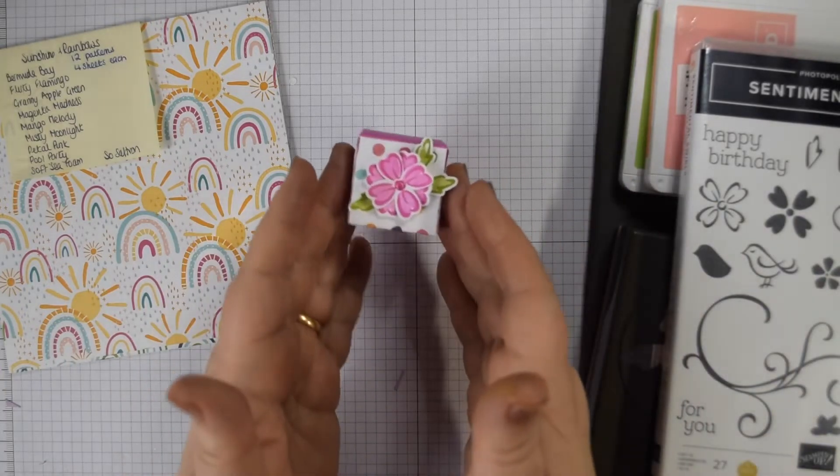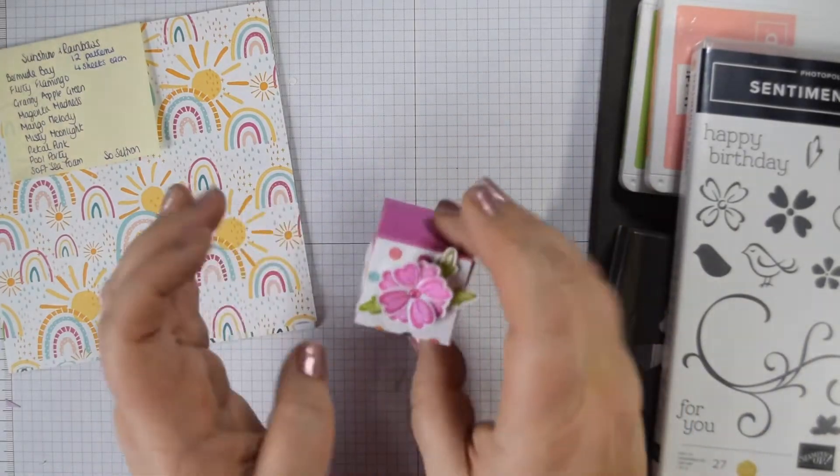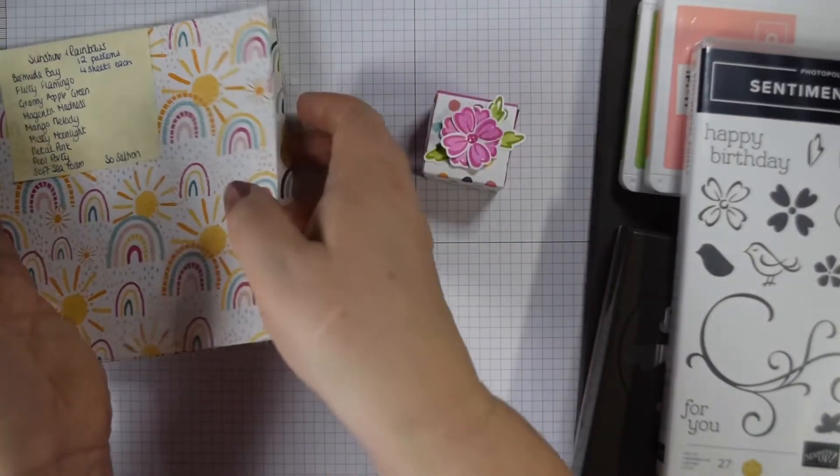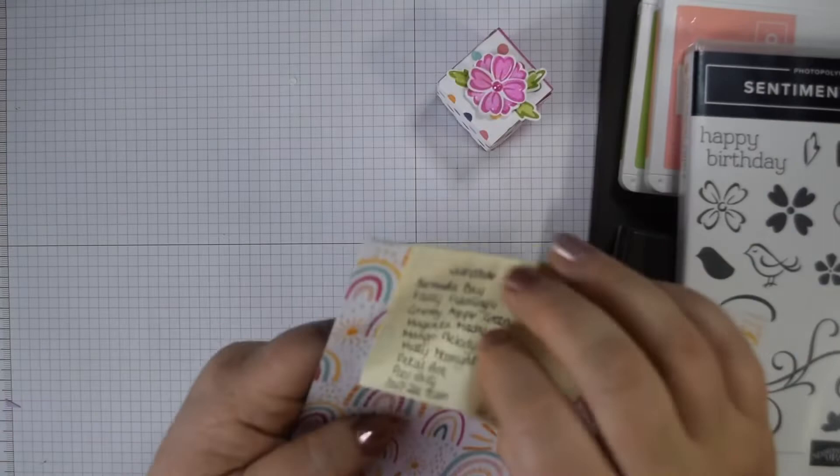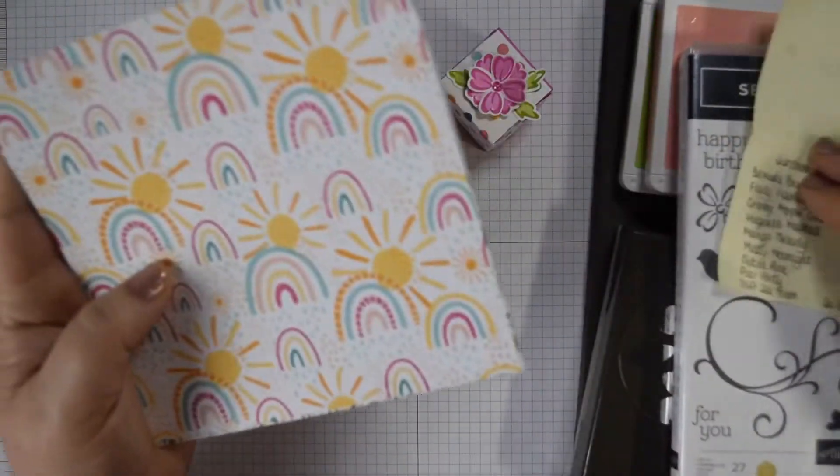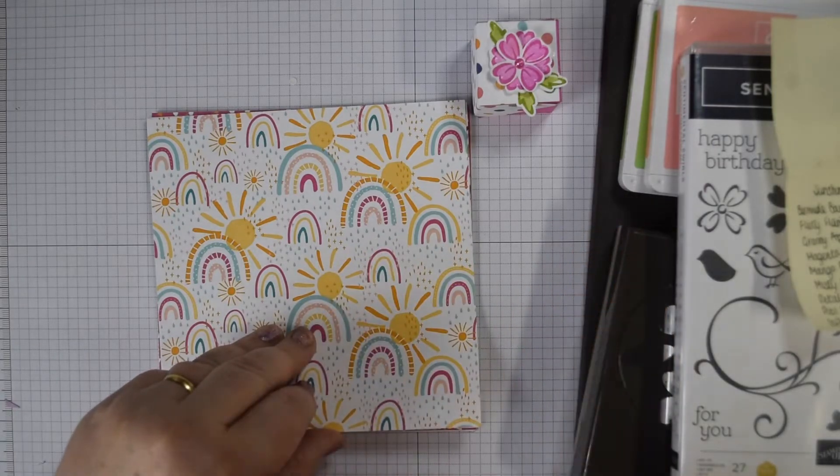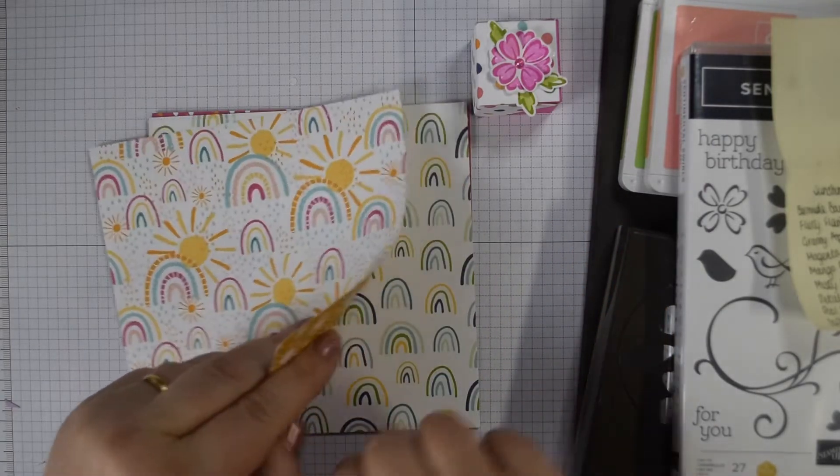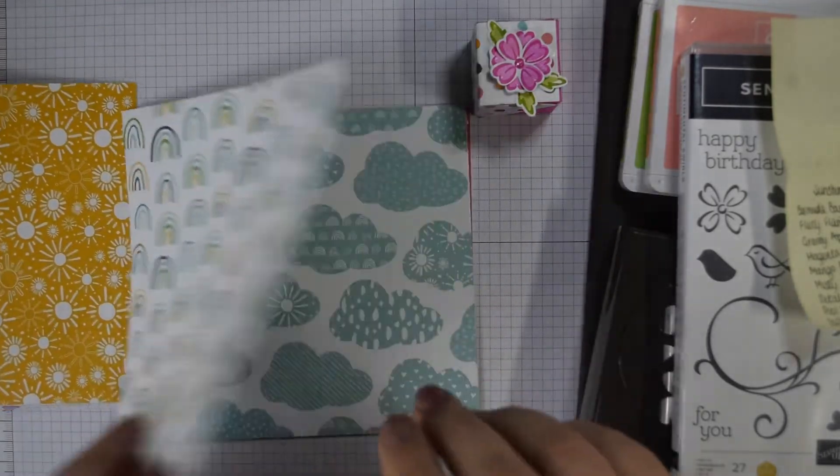I haven't done one of these for a while. This is a Ferrero project. I'm making a little Ferrero project and I'm using Sunshine and Rainbows. This paper is one of the free products in Saleabration and it is designed to coordinate with the rainbows bundle in the new mini catalogue. But there are such lovely patterns, you could use it for all occasions.